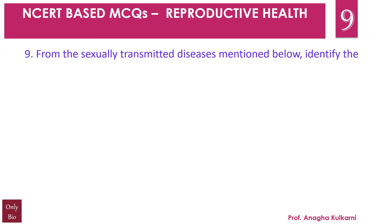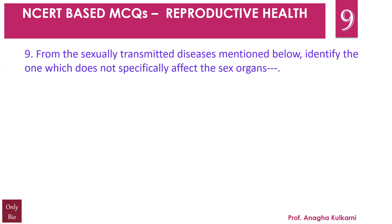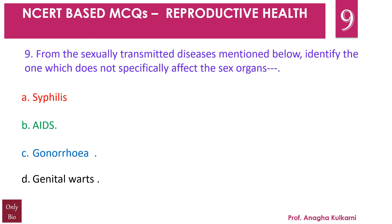Question number 9: From the sexually transmitted diseases mentioned below, identify the one which does not specifically affect the sex organs — A. Syphilis, B. AIDS, C. Gonorrhea, D. Genital warts. The correct answer is B — AIDS. AIDS is caused by HIV, a retrovirus, which affects T helper lymphocytes. There is a long incubation window period between infection and symptoms. Due to reduced T helper cells, the person becomes susceptible to opportunistic infections such as tuberculosis.